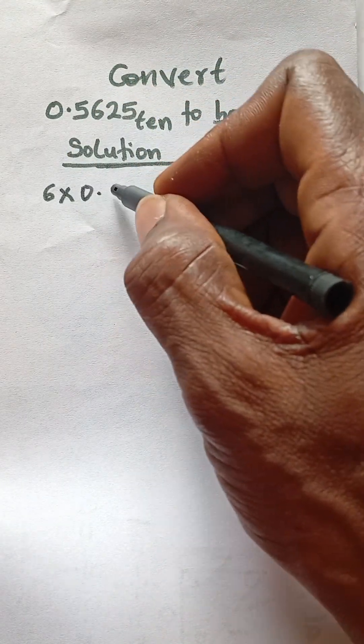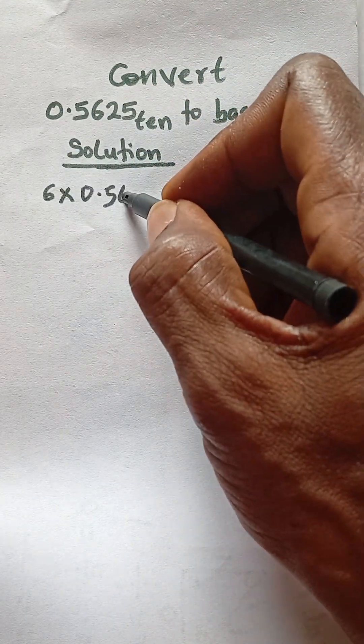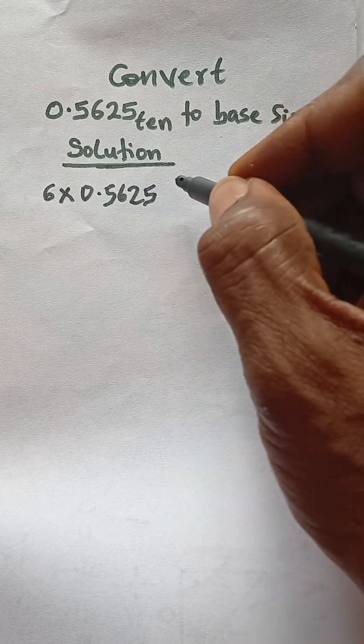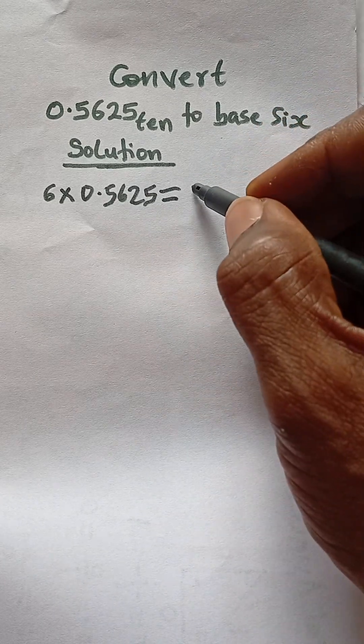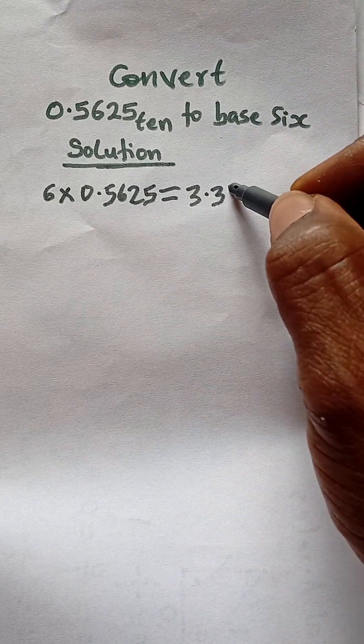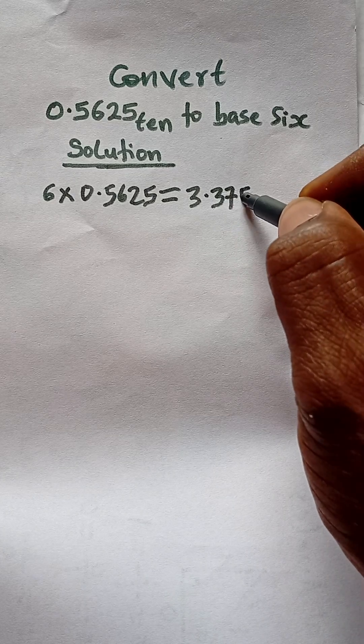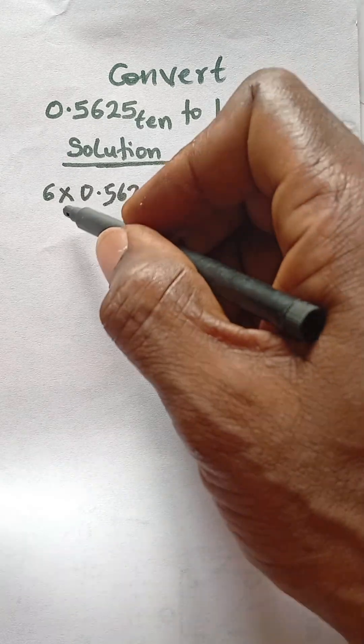it to multiply the value 0.5625, and that will give us 3.375. So what you do next, you take 6, the base 6, and multiply by only the decimal part of this number, which is 0.375.